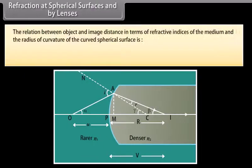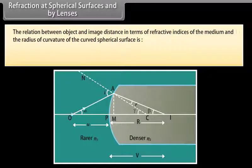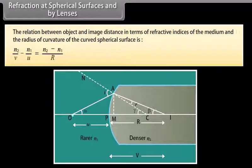The relation between object and image distance in terms of refractive indices of the medium and the radius of curvature of the curved spherical surface is: N2/V − N1/U = (N2 − N1)/R.